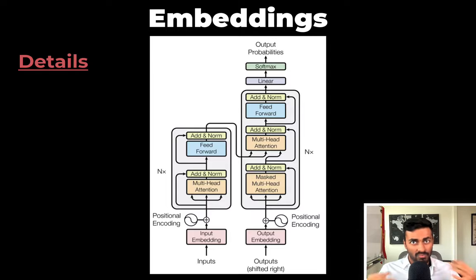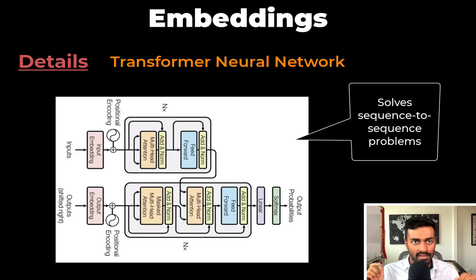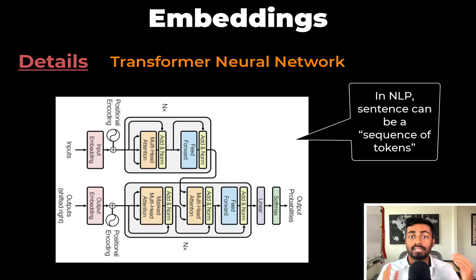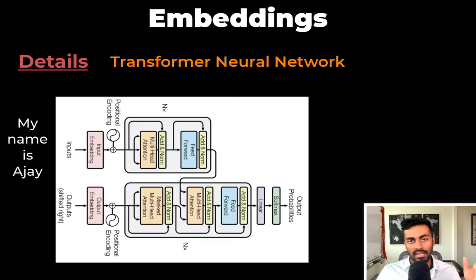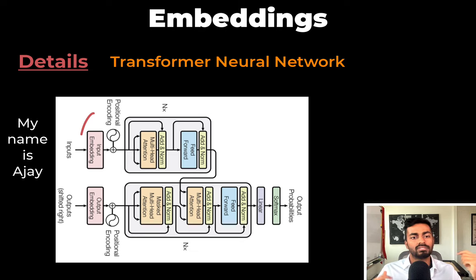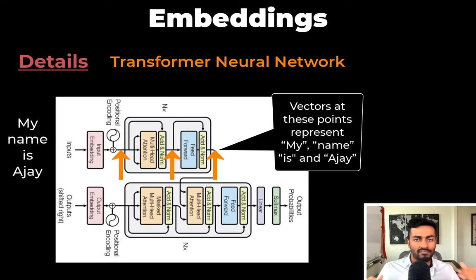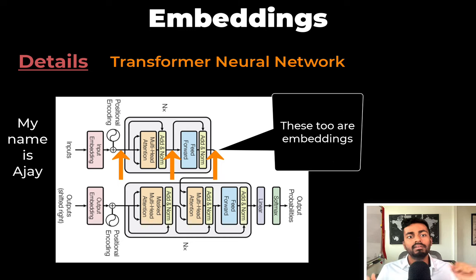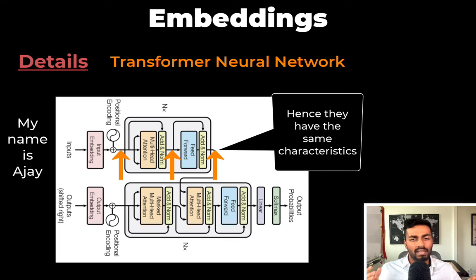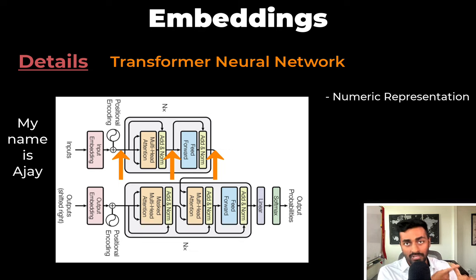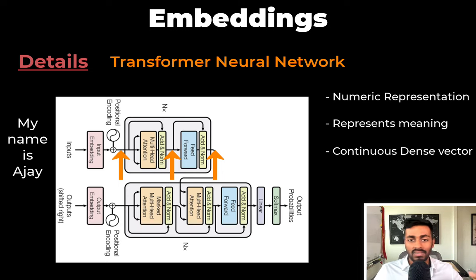Let's talk about where we see these embeddings more in practice. This is a transformer neural network, used to solve sequence-to-sequence problems. In NLP, sentences can be a sequence of tokens — we can give the network an English sentence and have it translate to a French sentence. But the network doesn't understand text, so each word needs to be converted into vectors or an input embedding. At different points in the network, intermediate vectors can also represent the input word — these are embeddings too. And while the embeddings of the same word in different layers may be different, the characteristics remain the same: each is a numerical representation of the input, each semantically represents the meaning of the word, each is a continuous dense vector, and each is a compressed notation of the original data.